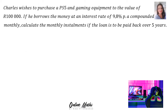Let's look at another example. Again, you will see that the sum consists of two parts. The first part is to work out X, the monthly or quarterly payments. In the second part, we will work out the outstanding balance on the loan. Leclerc wishes to purchase a PS5 and gaming equipment to the value of R100,000. If he borrows the money at an interest rate of 9.8% per annum compounded monthly, calculate the monthly installments if the loan is to be paid back over 5 years.